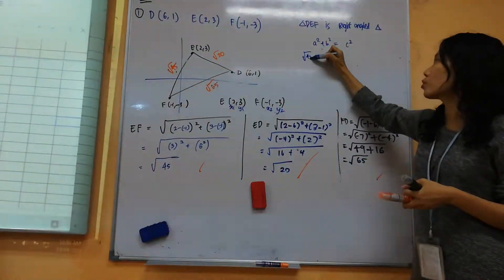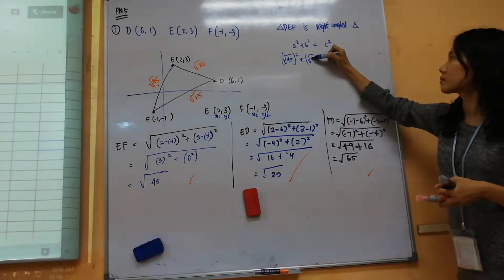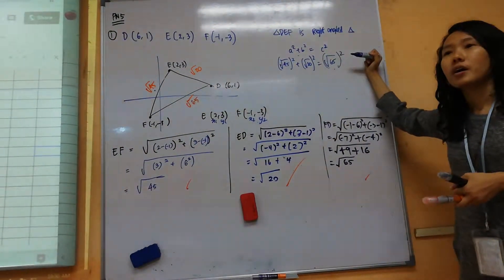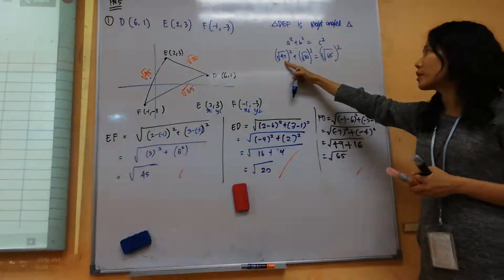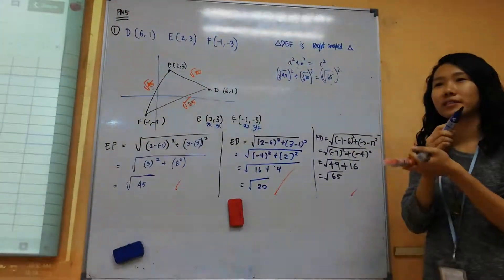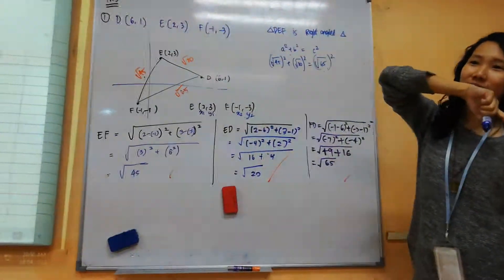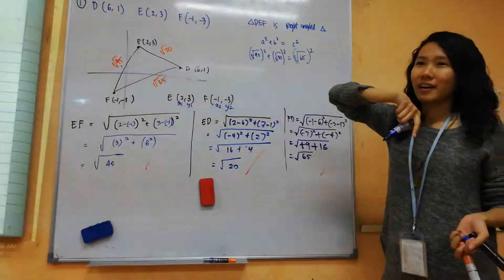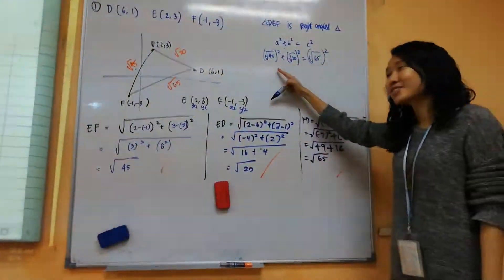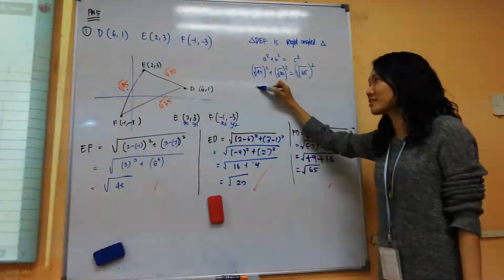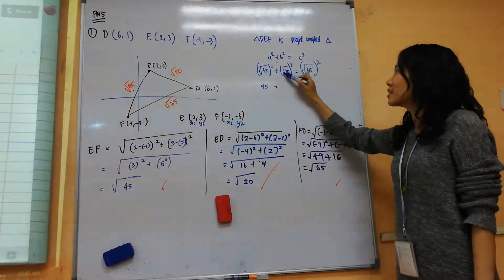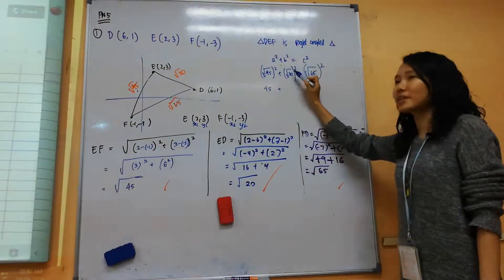So this one is the shorter one. See whether they are actually true. Square root 45 squared, what is square of square root 45? How do you get rid of a square root usually? You square, right? So do you still see any more square root here? So it's just 45. This one is 20.